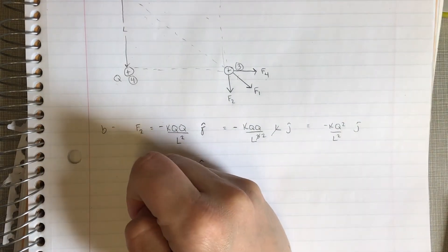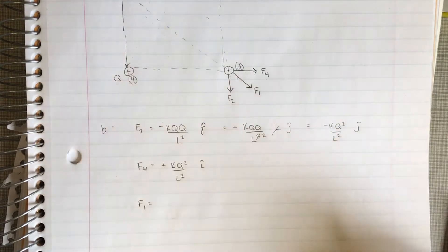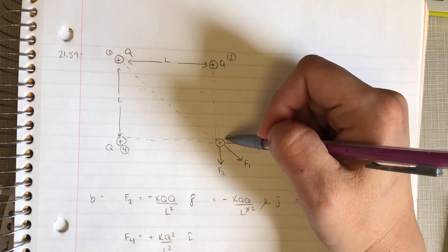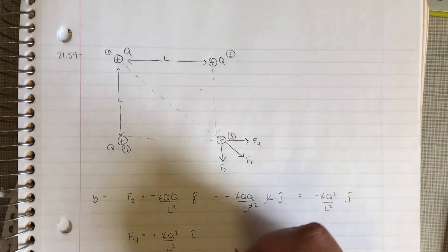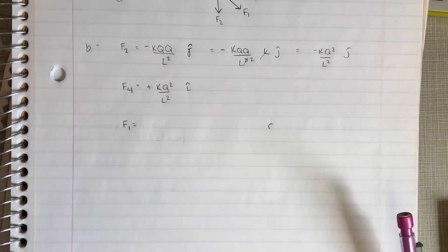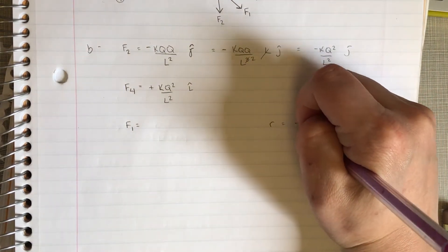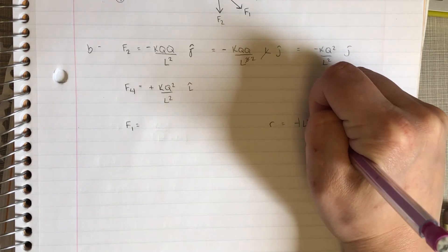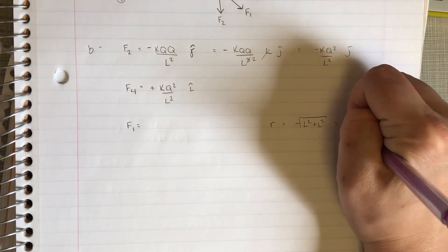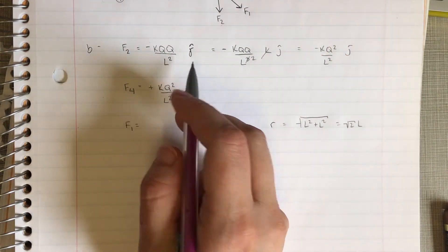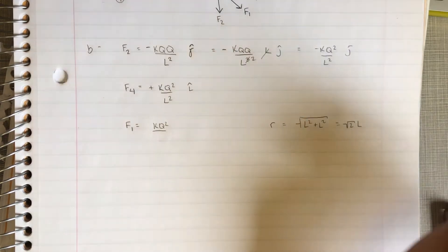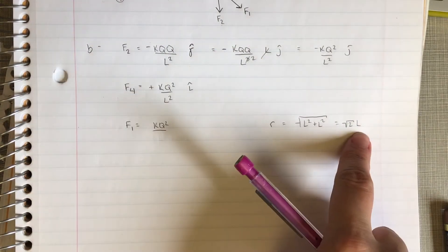Now let's look at f1. This guy, his r vector goes from here all the way down here. So r is going to be square root of L squared plus L squared, or root 2 L. If we do the squared r hat version, this is going to be k q squared over r squared, so it's going to be 2 L squared.